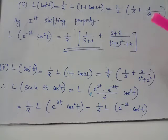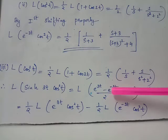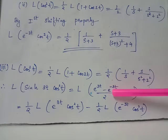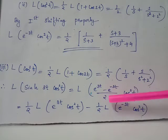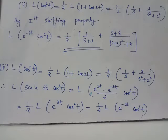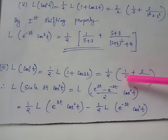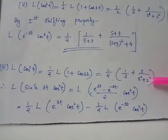The second term will be minus e^(-3t) multiplied by cos²(t), where the factor minus 1/2 can be taken outside using the linearity property again. By the shifting property, since we have the answer for the Laplace transform of cos²(t) already obtained, we proceed as follows.